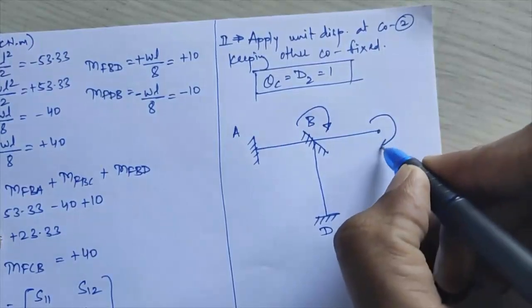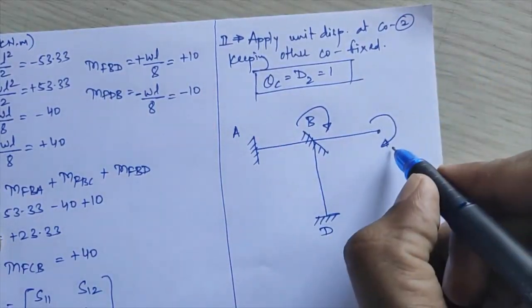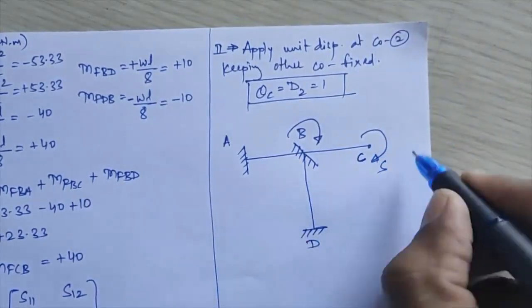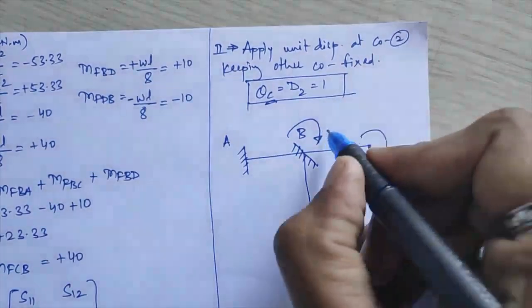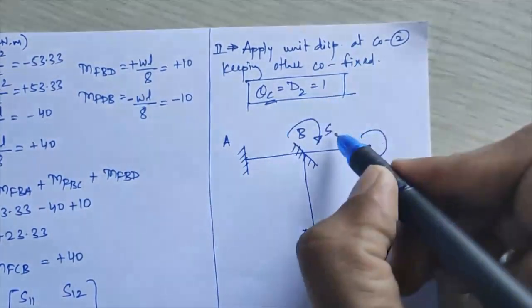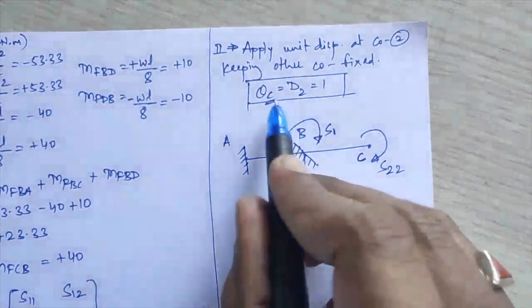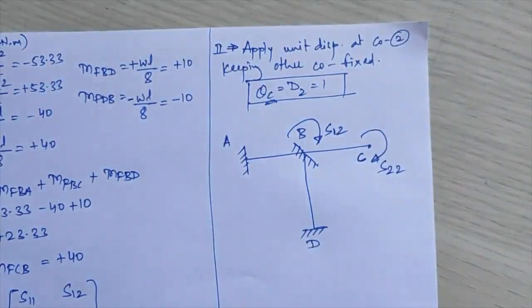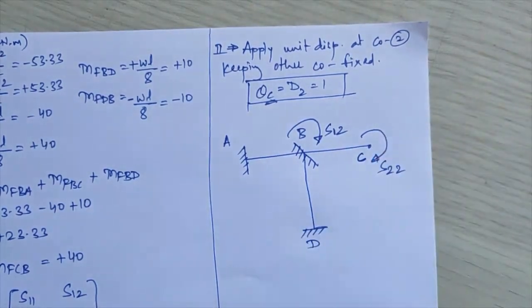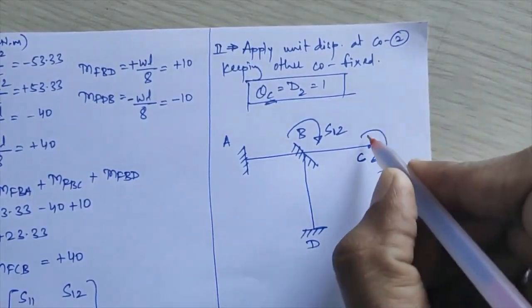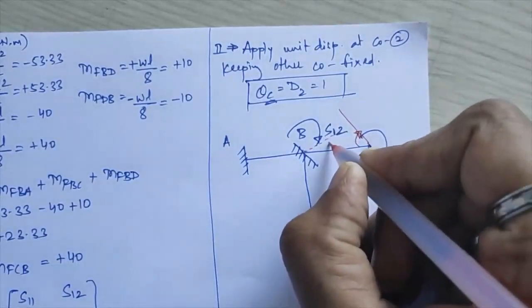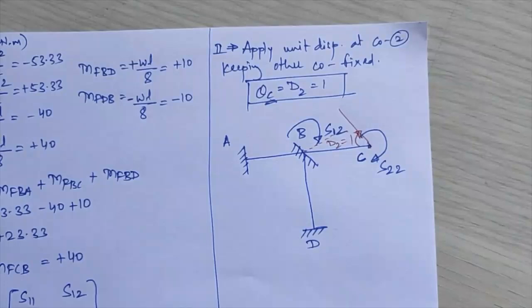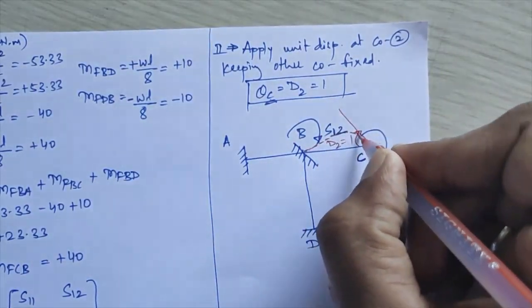The stiffness coefficient at coordinate 2 (point C) when unit displacement is applied at C gives S22; the coefficient at coordinate 1 (point B) gives S12. The clockwise rotation of S22 originates from the upward side, giving an upward displacement pattern showing D2 = 1.